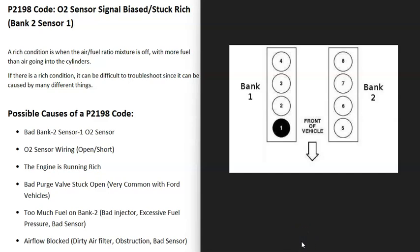V6 or V8 engines have two banks. Bank 1 is always the side of the engine with the number one cylinder. If you find the number one cylinder on your engine, the opposite side is Bank 2. This is the side of the engine that the computer is seeing a problem with.